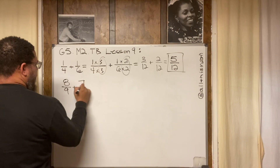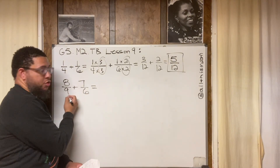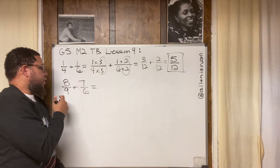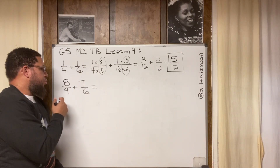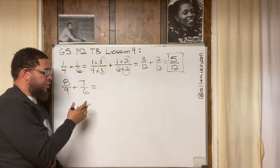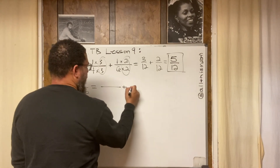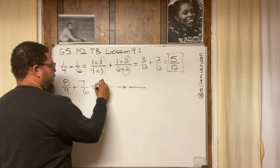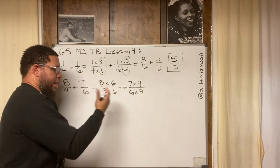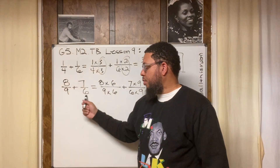Let's do another one: eight-ninths plus seven-sixths. Again, unrelated units because nine is not a factor of six and six is not a factor of nine. We have options — we could decompose and make both nine and six into 54ths. So we do eight times six over nine times six, and then seven times nine over six times nine. One option is to just multiply the denominators together.